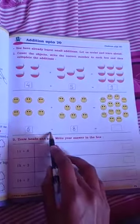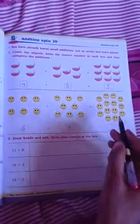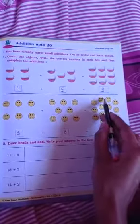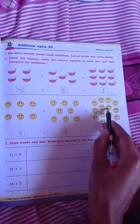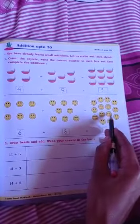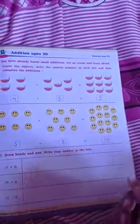6 plus 8. This is the addition sign. Right? 6 plus 8. 1, 2, 3, 4, 5, 6, 7, 8, 9, 10, 11, 12, 13, 14. Right? There are 14 smiley balls.